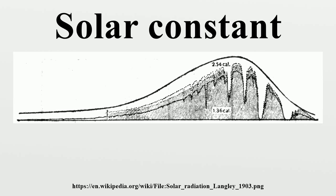In 1884, Samuel Pierpont Langley attempted to estimate the solar constant from Mount Whitney in California. By taking readings at different times of day, he tried to correct for effects due to atmospheric absorption. However, the final value he proposed, 2.903 kW per square meter, was much too large.